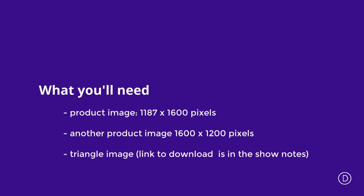There are a few things we're going to need in order to complete our project. We're going to need some product images. The first one is going to be 1600 pixels high by 1187 width. The other image is going to be 1600 width and 1200 high. We're also going to need a PNG image that you'll have to download from the post, which I'll link to in the show notes below.